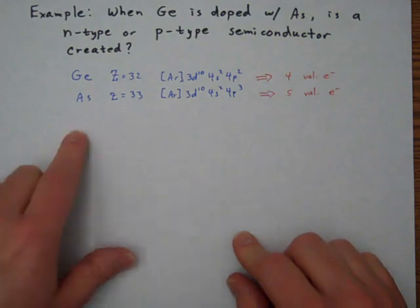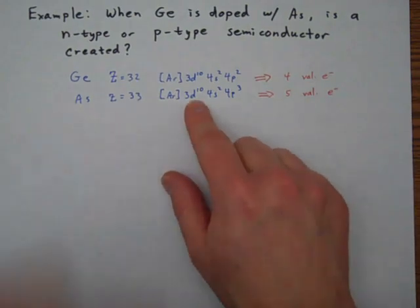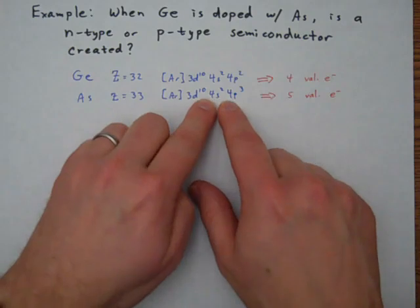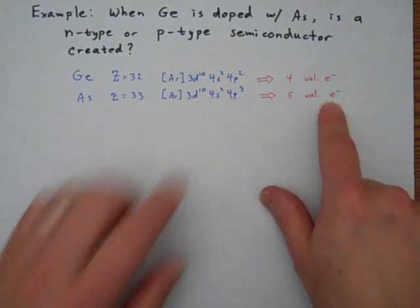And here's arsenic. That's our dopant that we're putting in. The impurity that we're adding. And it has 3d10, 4s2, 4p3. So the outer shell is the n=4 shell. And we've got 1, 2, plus 3, equals 5 valence electrons.